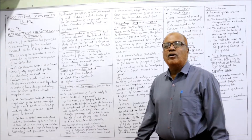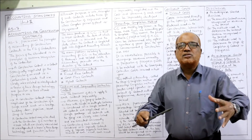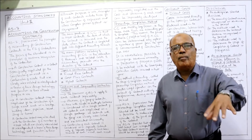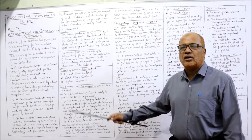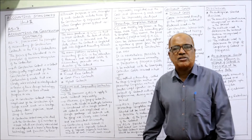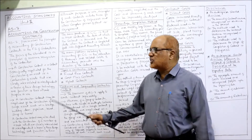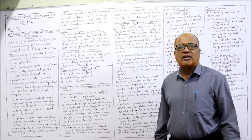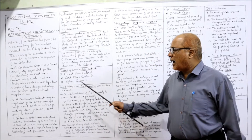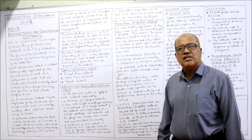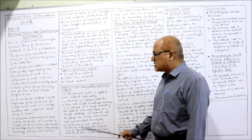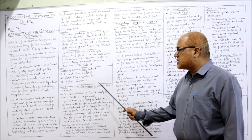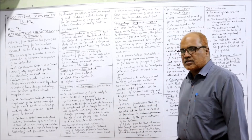The third type is a hybrid contract, which is a combination of fixed price and cost plus contracts, incorporating features of both.